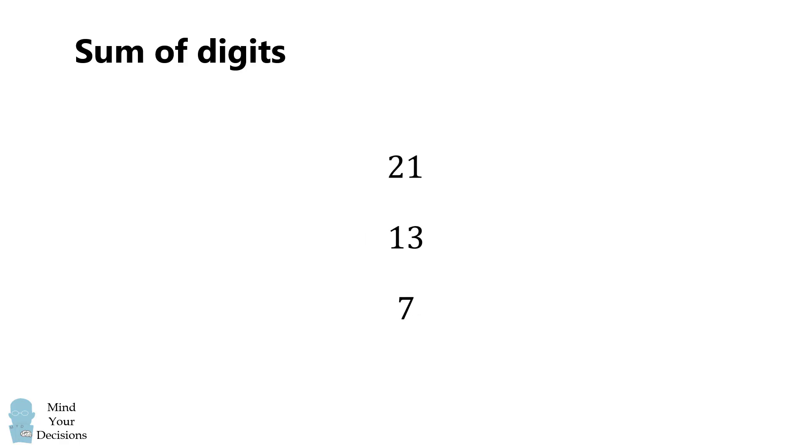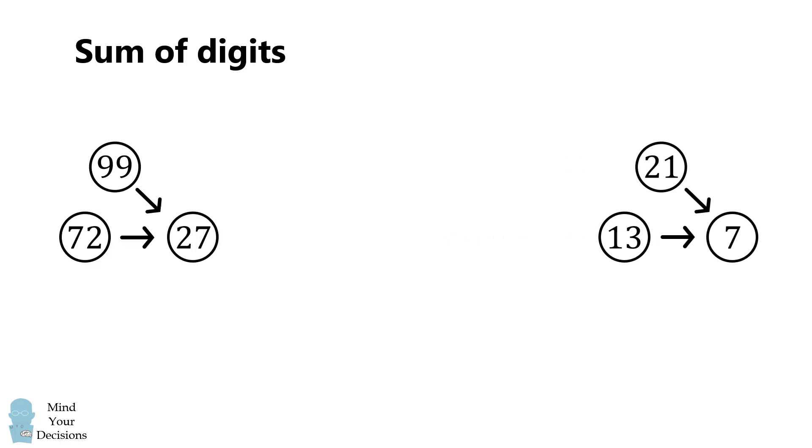So we have a new candidate for the rule. We can then check all the other cases. Let's consider 99 and 72. Well, 9 plus 9 plus 7 plus 2 is equal to 27. So it works. For the next case, for 45 and 27, we have 4 plus 5 plus 2 plus 7, and that is equal to 18.